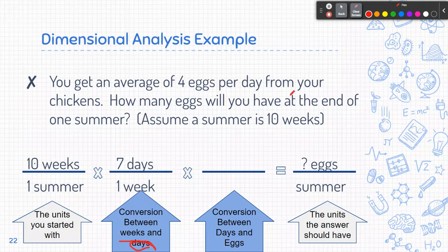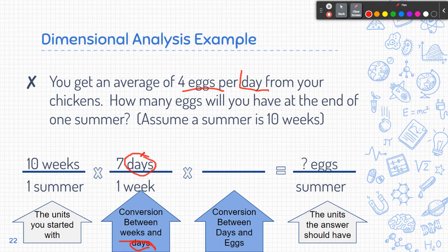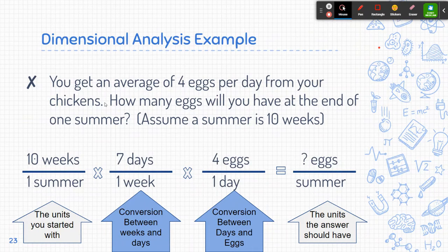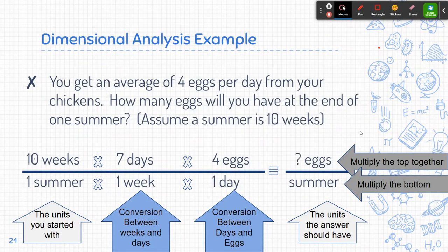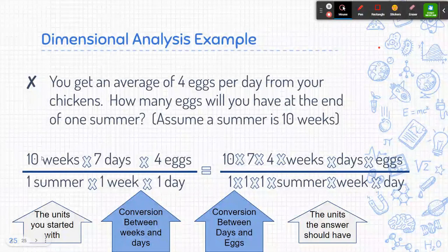Now I'm going to do days to eggs. I have four eggs per day, so that's one day. Because I have days on the top, that means I'm going to want days on the bottom. So four eggs go on top and one day goes on the bottom. Now all I need to do is multiply this together, and I'm going to rewrite this a little bit differently. I've found that writing it this way helps students see how it works. I'm going to multiply all the things on the top together, then separately multiply everything on the bottom together.